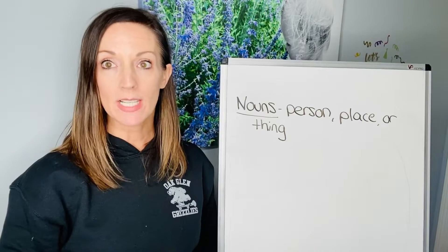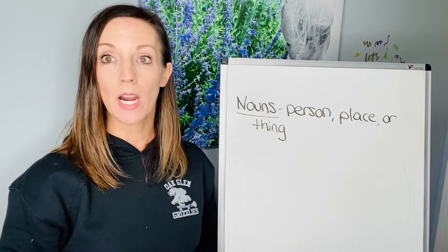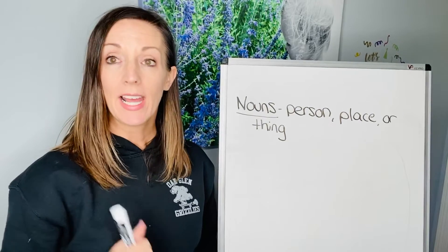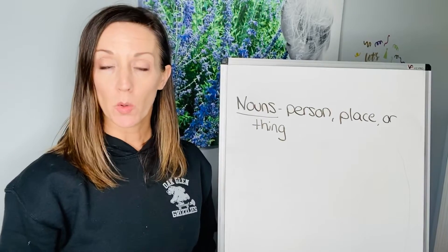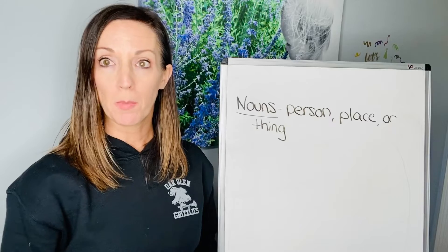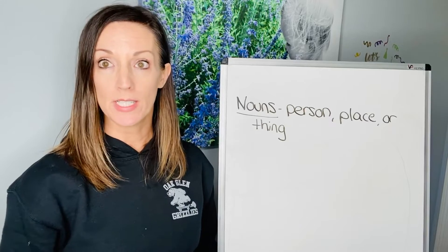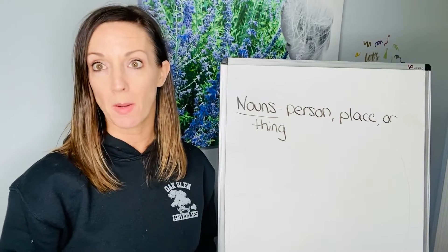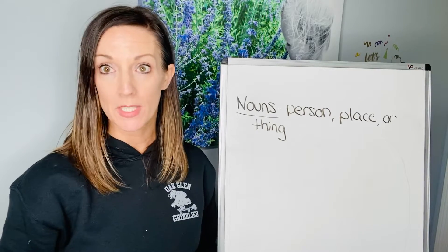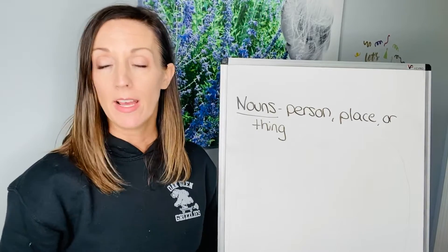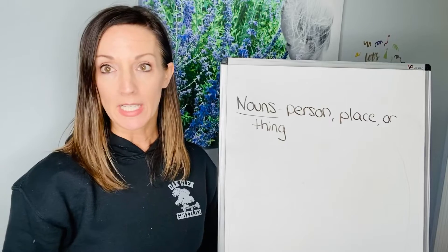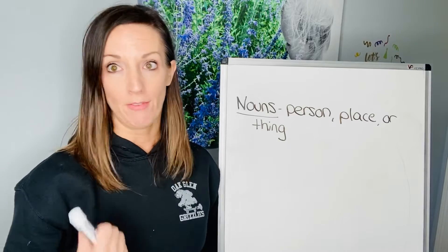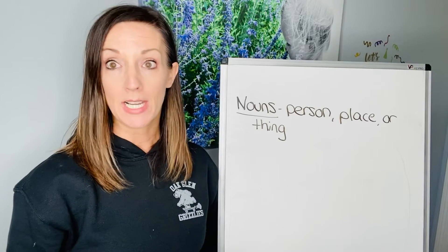A noun is a person, place, or a thing. And you are going to come up with some nouns you see around your home. So you're going to come up with five nouns you see in the kitchen, five nouns you see in a bathroom, and five nouns you see in a bedroom.